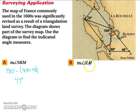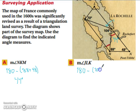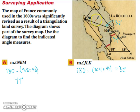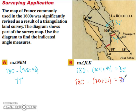The next angle is JLK. We have a triangle, but we first need to find a missing angle measure. Since a line is 180 degrees, we have 180 minus 104 plus 44, which gives us 32 degrees. Now that we have 32 degrees, and knowing a triangle is 180 degrees, we take 180 and subtract the quantity 70 plus 32, and we end up with 78 degrees.